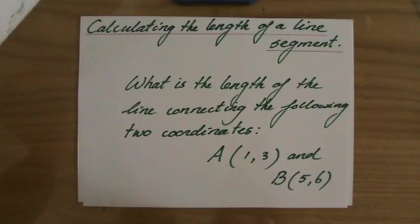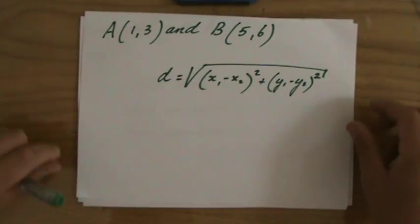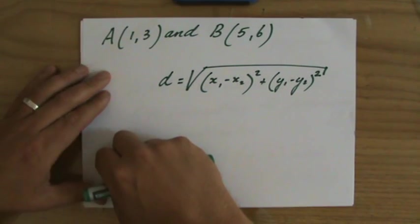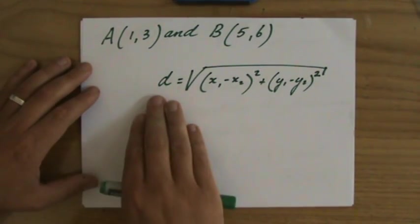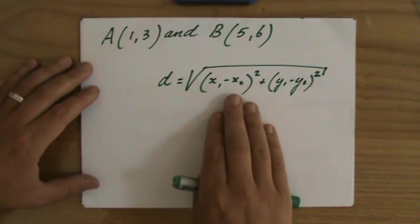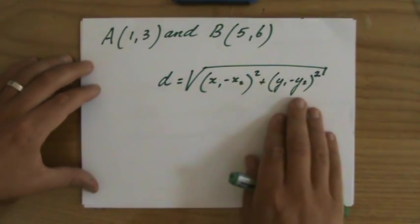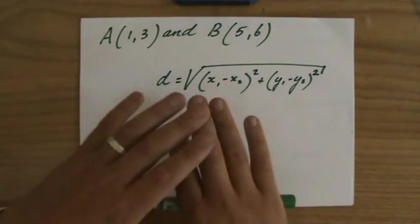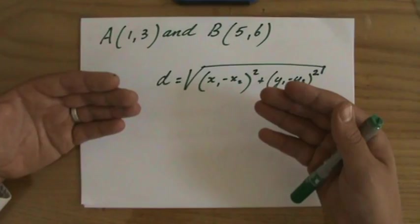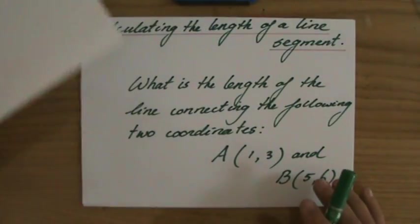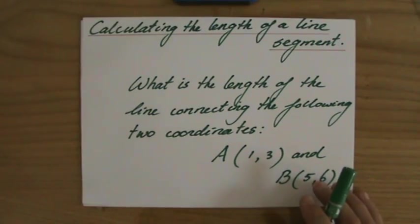Now, textbooks usually say if you have to calculate the length of a line segment, you have to use this formula. That's a very complicated looking formula. They say the distance is the square root of x1 minus x2 squared plus y1 minus y2 squared. It looks so complicated that I get a little bit nervous, and I want to show you that you can really actually almost forget that formula.